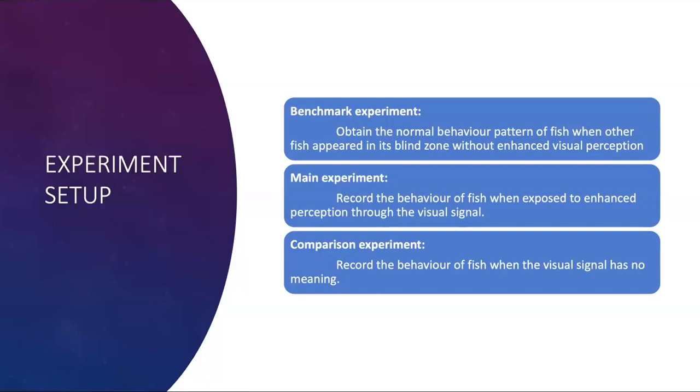This is the reason why we try to do this, setting up such experiments. For the benchmark, we obtain the normal behavior pattern of the fish during and not during when there's a fish behind it. In the main experiments, we record the behavior of fish when it is exposed to our method of enhancing perception. And for comparison experiments, we record the behavior of fish when we display the signal randomly, without any pattern.